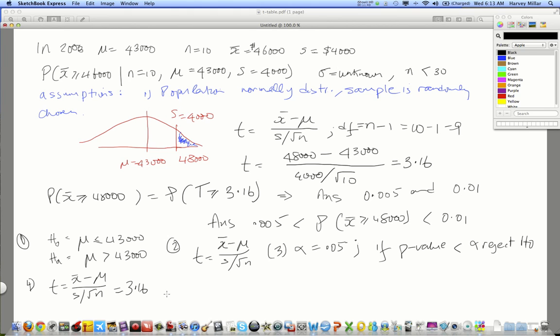What's the p-value? Well, guess what? We've already calculated it up there. So, the p-value is between 0.005 and 0.01. Now, step 5, the decision conclusion.